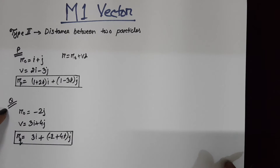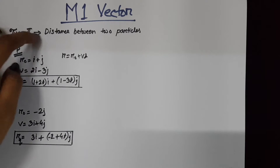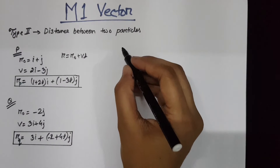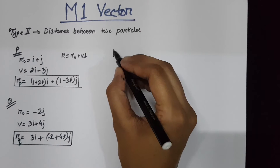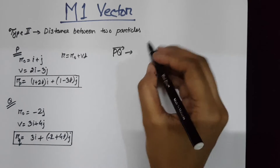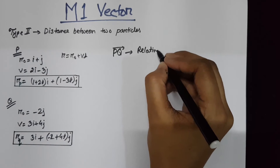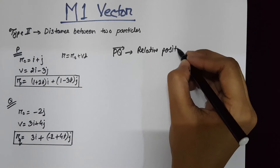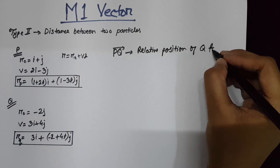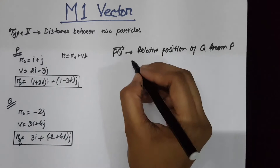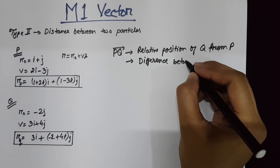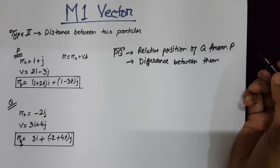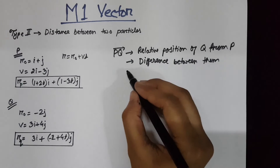Similarly, for another particle Q, you can find the final position after t seconds. If we need to find the distance between these two particles, we need to find the difference between the two particles — that is PQ, the relative position of Q from P. This difference will be in vector form, giving you the displacement.